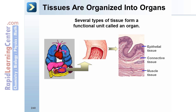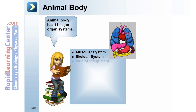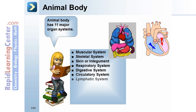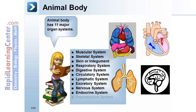The stomach consists of muscle tissues, connective tissue, and epithelial tissue. Animal bodies have 11 major organ systems: muscular system, skeletal system, skin or integument, respiratory system, digestive system, circulatory system, lymphatic system, excretory system, nervous system, endocrine system, and reproductive system.